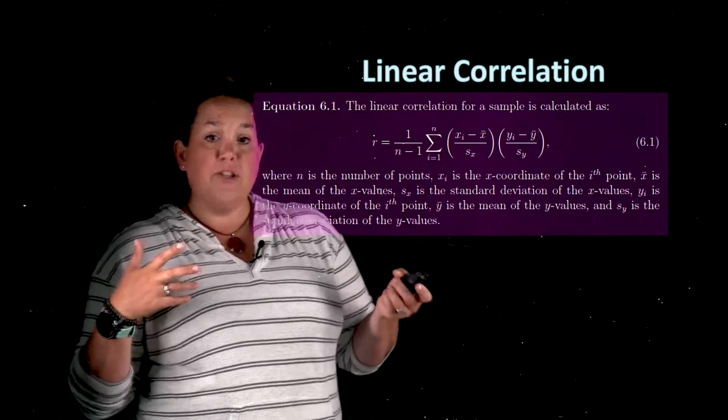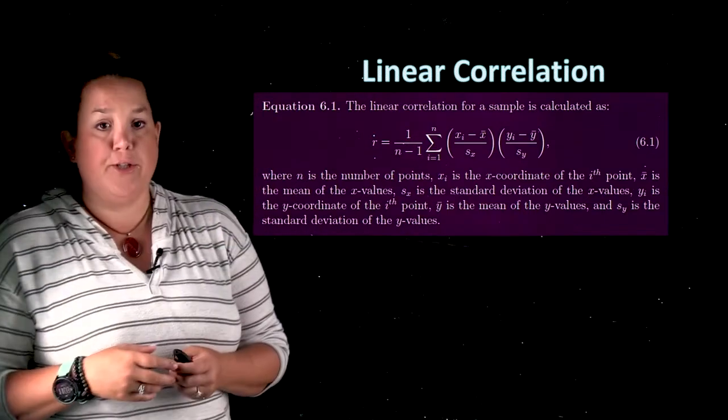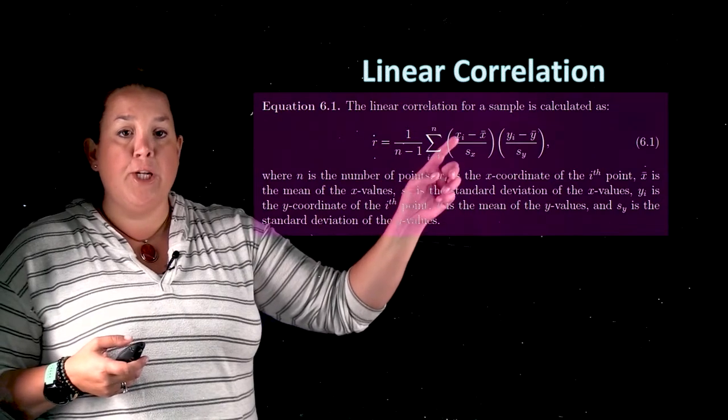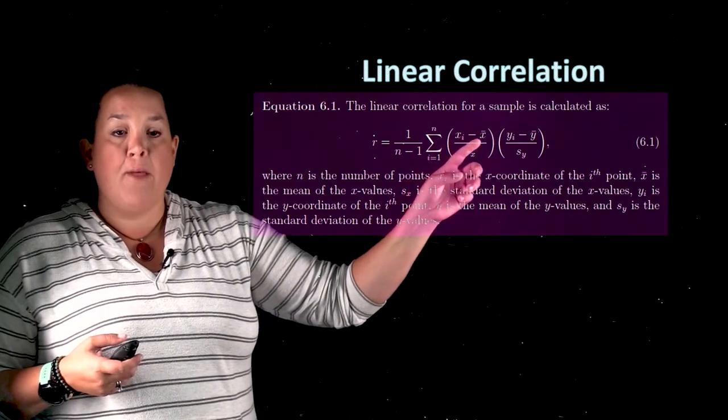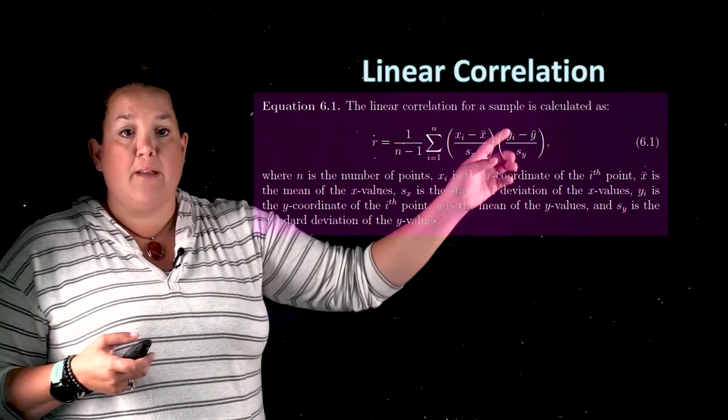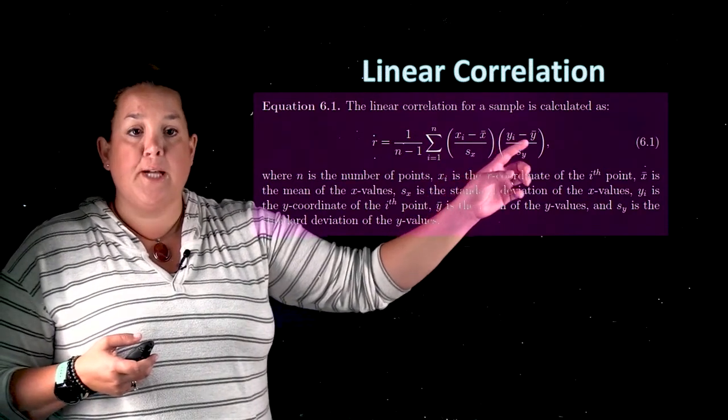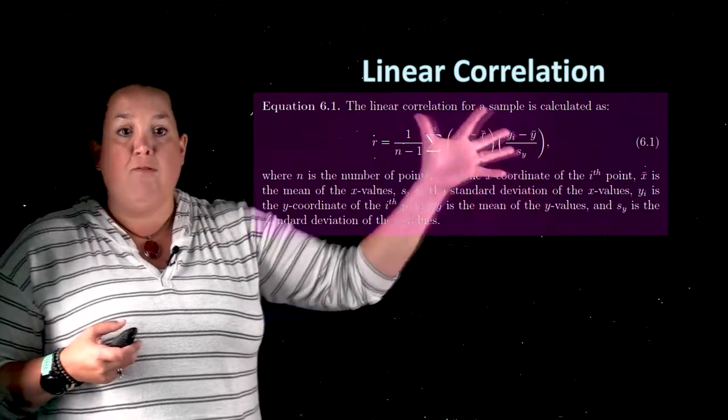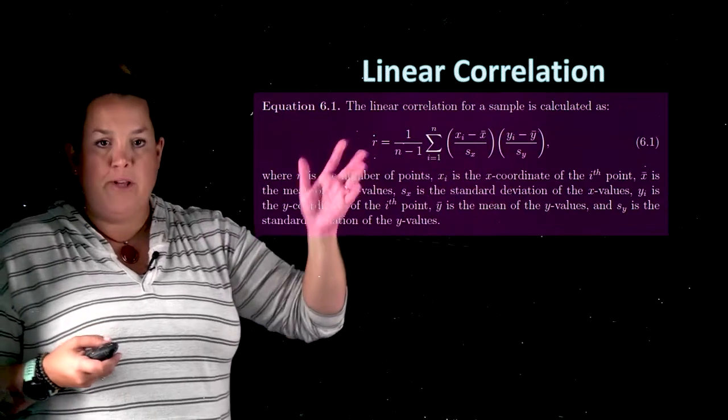So here's the formula for this linear correlation. Now you can see what it's actually doing is it's going to take each observation, so that's the x sub i, and then it will subtract the mean for all of the x's, and then it's going to take all of the y observations and subtract the mean for all of the y observations. Fortunately, you can see how much work this formula is.